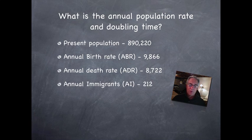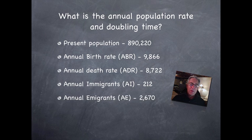For instance, the annual immigration rate, or immigrants (AI), is 212. That's the number of people coming into your country, which you should calculate as well. This is not part of the natural growth rate. Then we have annual emigration (AE), which is the people leaving. In this case, there are a lot of people leaving this country—2,670. These are actual numbers from a particular country. You have to use immigration and emigration, along with annual birth and death rates, to determine the doubling time. Let's see how these work.